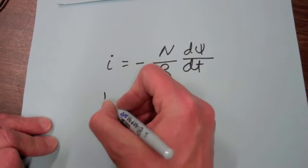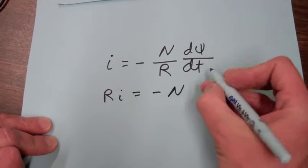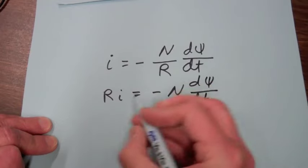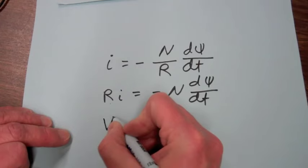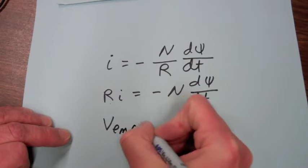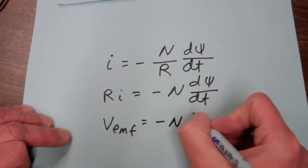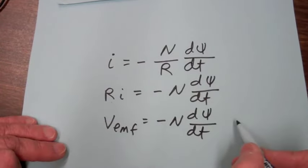So now if we multiply both sides of the equation by R, we get Ri = -N dΦ/dt. And resistance times a current is a voltage or a potential. We call that the electromotive force. And so the electromotive force is equal to -N dΦ/dt. And this is known as Faraday's Law.